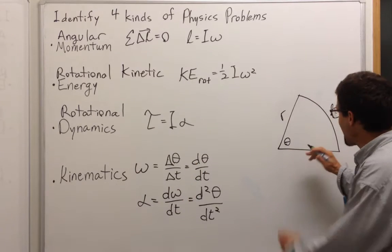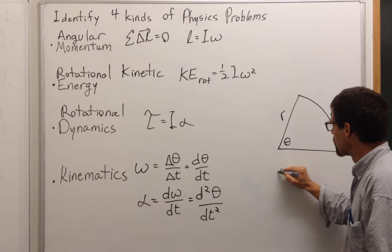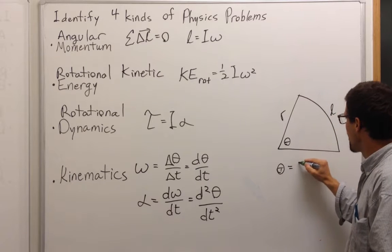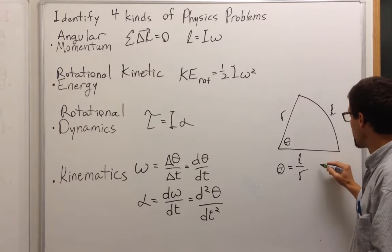We've identified theta as a ratio of length to radius. So theta is equal to L over R, is unitless, no units.